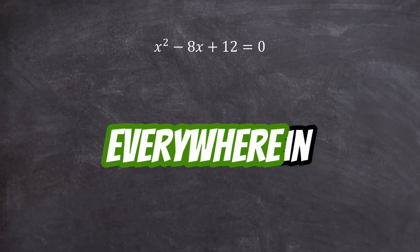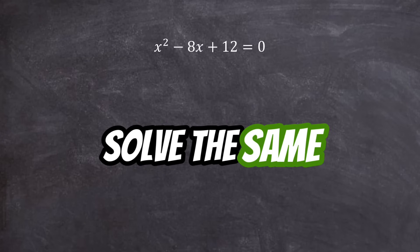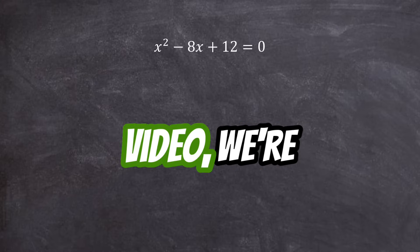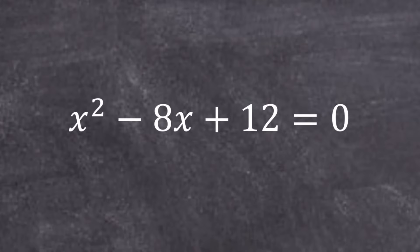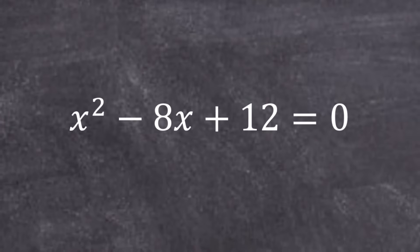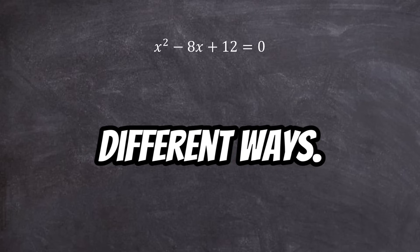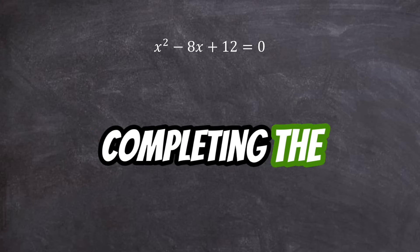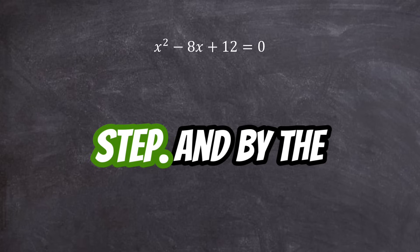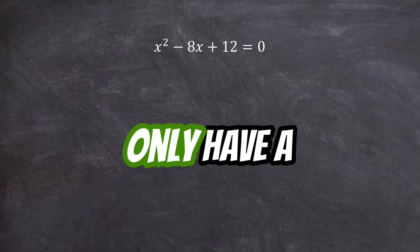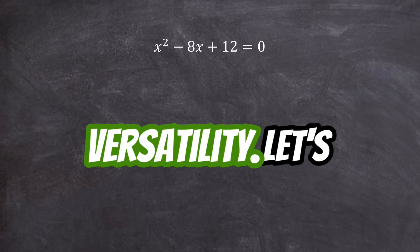Quadratic equations are everywhere in math, but did you know there are multiple ways to solve the same equation? In this video, we're taking the equation x squared minus 8x plus 12 equals 0 and solving it in 10 different ways. Whether you're a fan of factoring, completing the square, or even graphing, we'll explore each method step by step, and by the end you'll not only have a solution, but you'll see the beauty of math through its versatility.